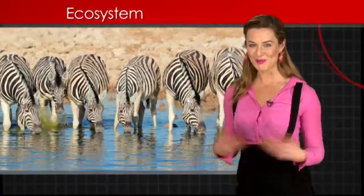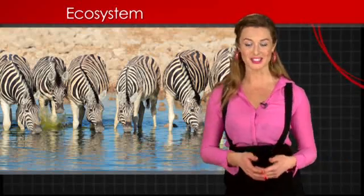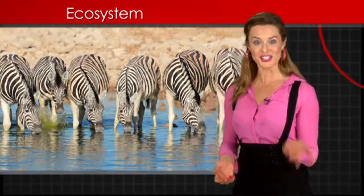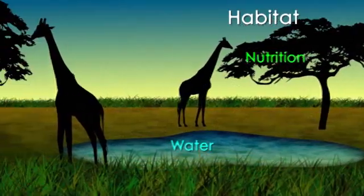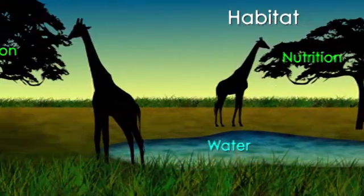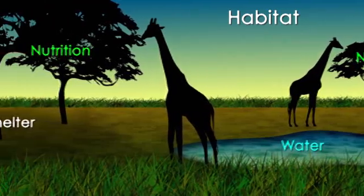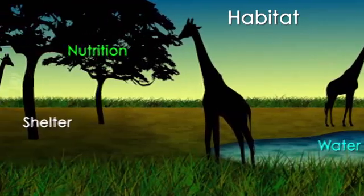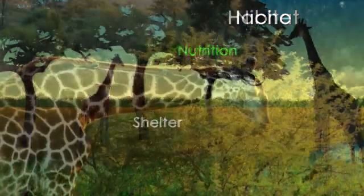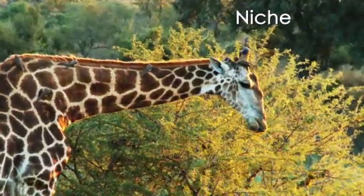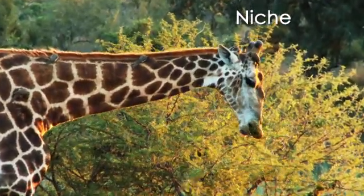Two of the most important concepts in the study of ecosystems are niche and habitat. A habitat is a place where an organism lives. Organisms must get nutrition, shelter, water and the other things they need to survive from their habitat.